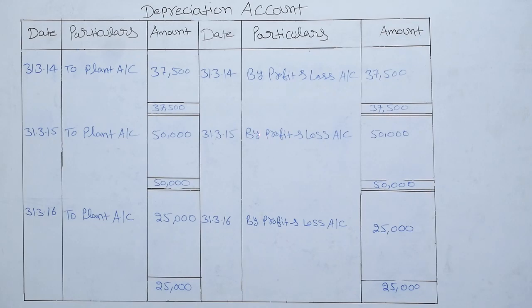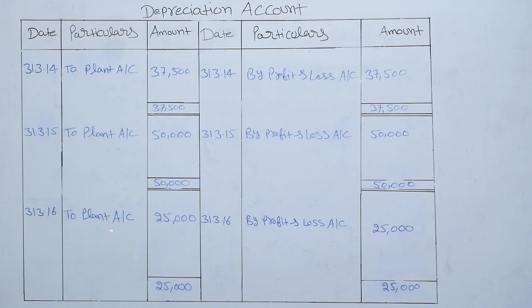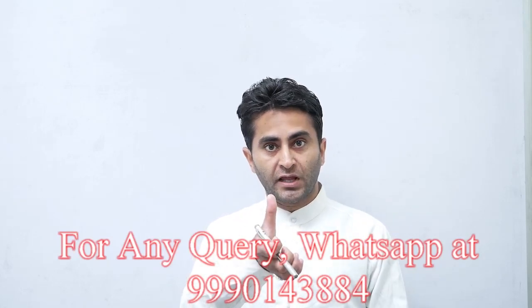On 31st March 2015, in the third year there will be depreciation of 6 months, as ABC Company sold the machine on 30th September 2015, so we will charge depreciation for a period of 6 months. To plant account Rs 25,000. By profit and loss account Rs 25,000. Now that this is done, if you have any doubt, please let me know in the comment section. Thank you.